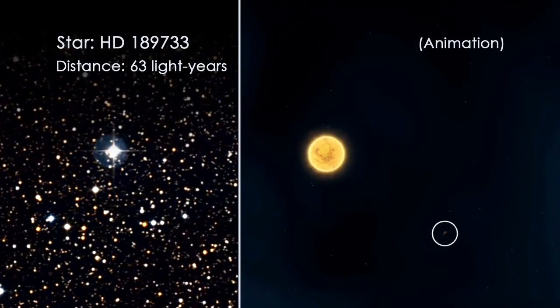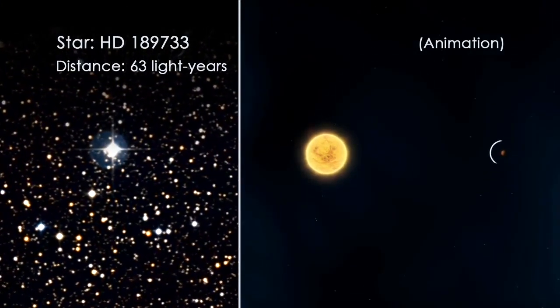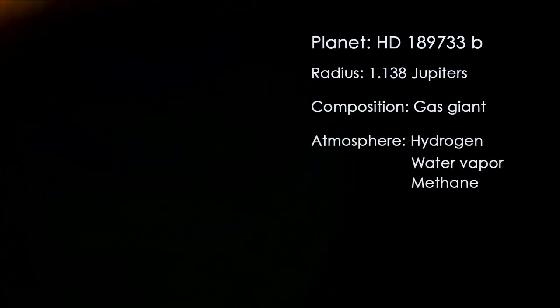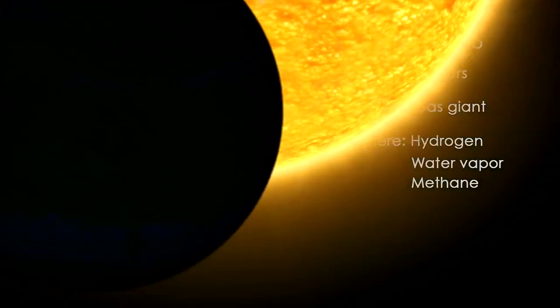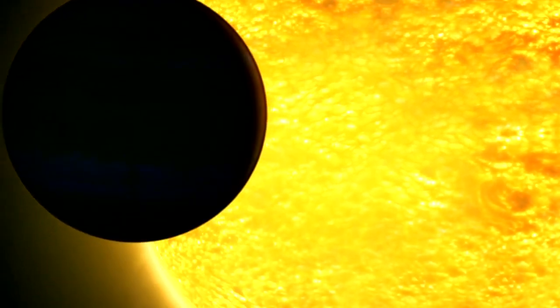Because most exoplanets are too far away to be directly imaged, characteristics such as size, composition, and atmospheric makeup must be determined through a variety of indirect methods.